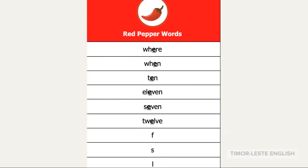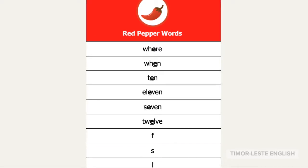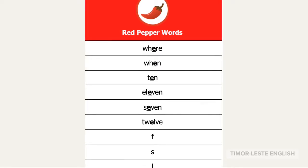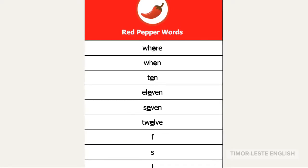Here are all the red pepper words: red pepper E. Where, when, ten, eleven, seven, twelve, F, S, L.